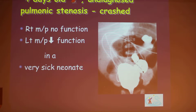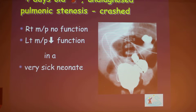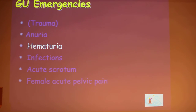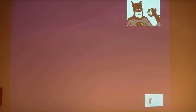Not only did she have pulmonic stenosis — she was undiagnosed and she crashed. On the cystography you can see severe reflux on the left side. The reason for her acute renal failure is a combination of factors: the right kidney had no function at all, the left kidney had decreased function due to severe reflux, and she was a very sick neonate.